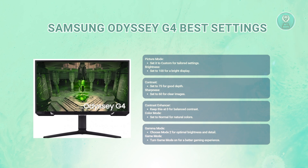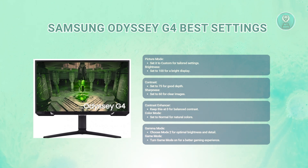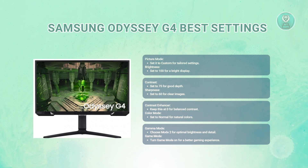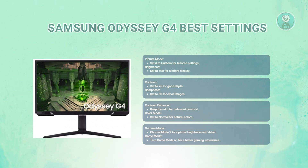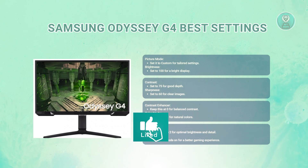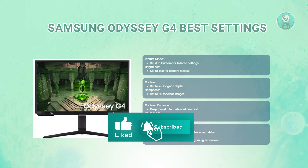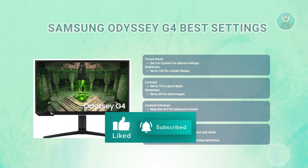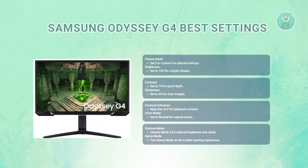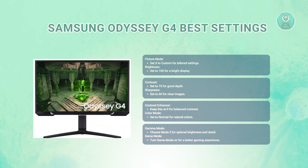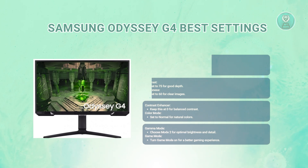Next, you have your Gamma Mode — choose Mode 2. This setting optimizes the brightness and details, specifically in darker scenes, enhancing your overall viewing experience. For Game Mode, you might want to turn on Game Mode. This setting optimizes your display for gaming, reducing input lag and improving response times for a better gameplay experience.